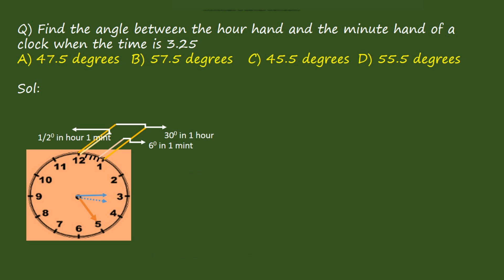First question: find the angle between the hour hand and minute hand of a clock when the time is 3:25. First, solving by theoretical method. Consider the clock at 3:25. The minute hand is at the longer hand position. From 3 to 4 is 30 degrees, and from 4 to 5 is also 30 degrees, so the total angle from 3 to 5 is 30 plus 30, which equals 60 degrees.